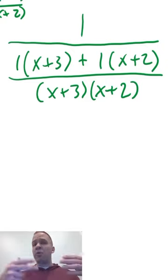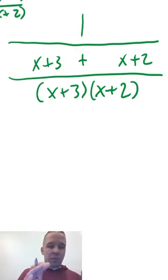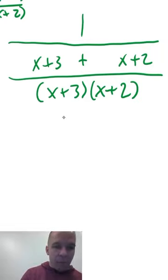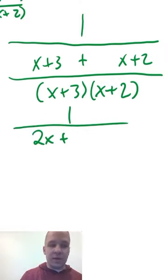If they were like a two or a three or something else, I'd need to distribute it in. So really at this point, I can just go ahead and combine some like terms in that numerator of my denominator of this complex fraction. So I'm gonna have one divided by, and then I'll have X plus X is two X, plus three plus two is gonna give me five.